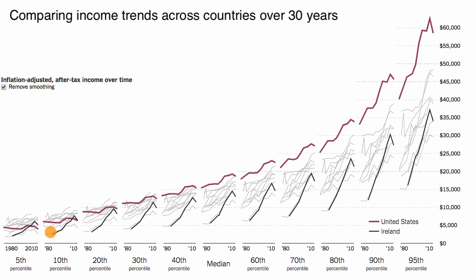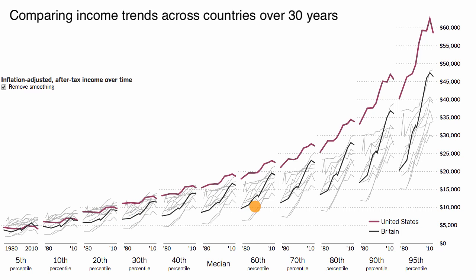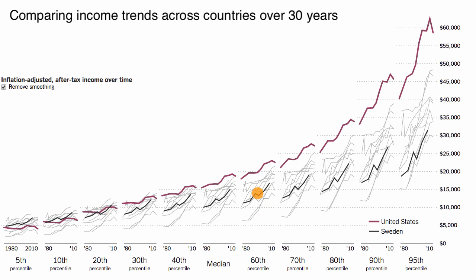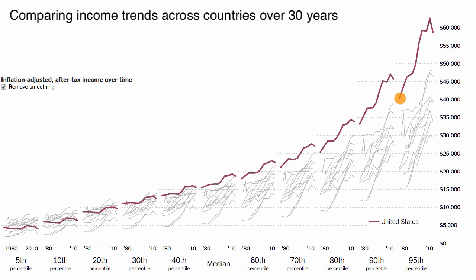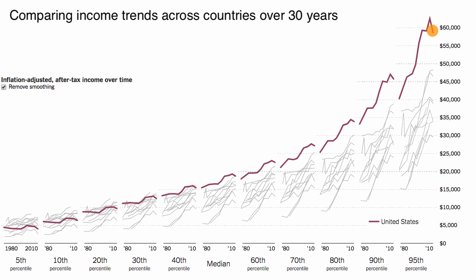We can also see that trend for the 10th percentile, 20th percentile, and so on. The benefit of being in the United States over that time period, and the improvement in inflation-adjusted after-tax income, seems to be more dramatic in the United States as you get to the higher percentiles. At the 95th percentile, the United States was already better off than everyone else in 1980, and the gap between those 95th percentiles has only increased.